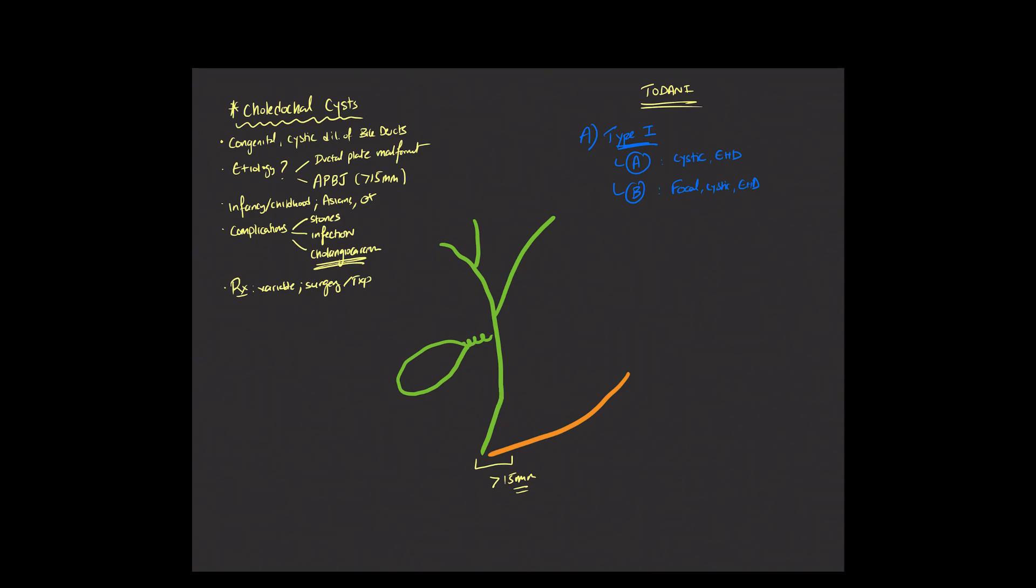And finally, type 1c is when you have a more fusiform shape associated with the extrahepatic biliary ductal dilatation. So it has sort of a fusiform or spindle shape as opposed to a very cystic shape that can be seen with type 1a and type 1b.